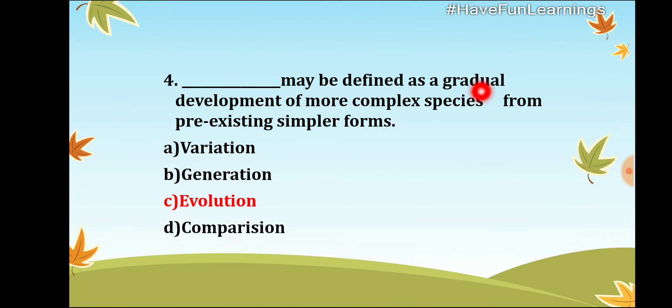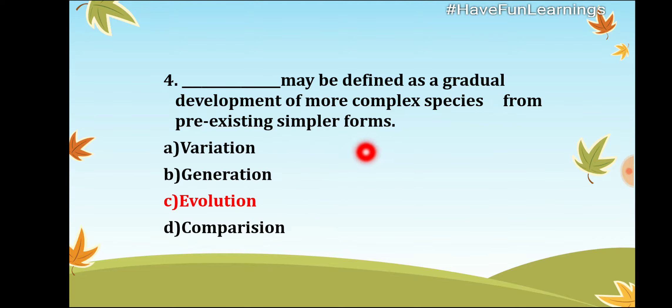Evolution may be defined as the gradual development of more complex species from pre-existing simpler forms, generation by generation. That is what is called evolution.